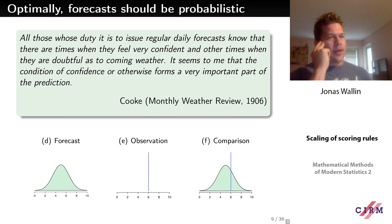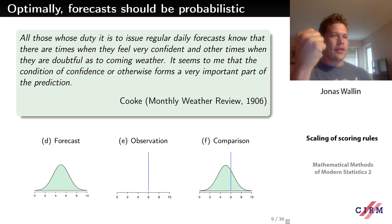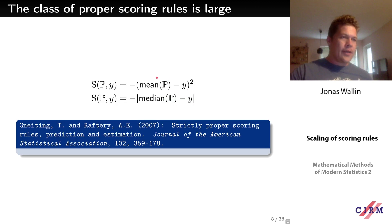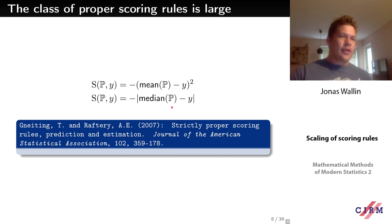If you look at the mean absolute error, by just plugging in the median, there is no way to account for the uncertainty of the distribution used. Any distribution, as long as we know the median, will have the same score — so we lose the information about uncertainty around the observations. We really want forecasts that take uncertainty into account and value it appropriately.